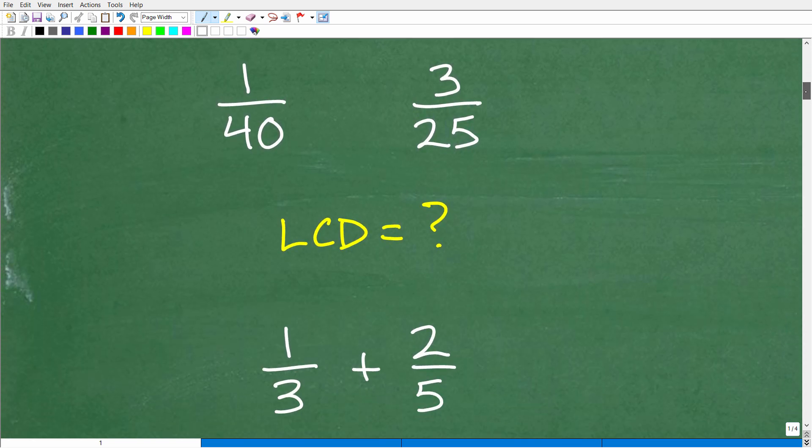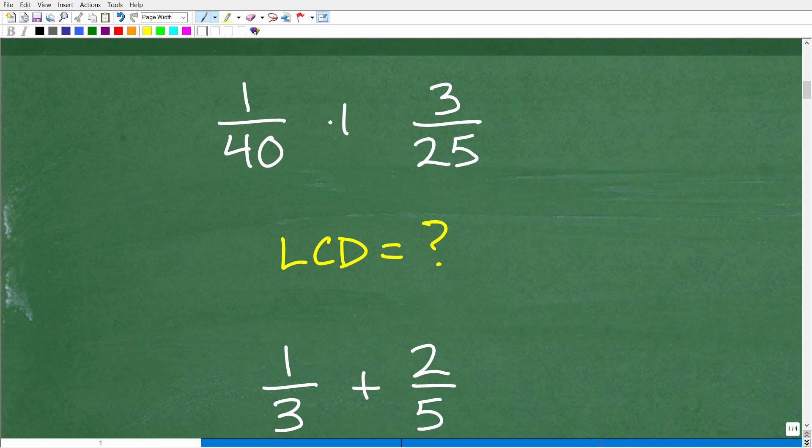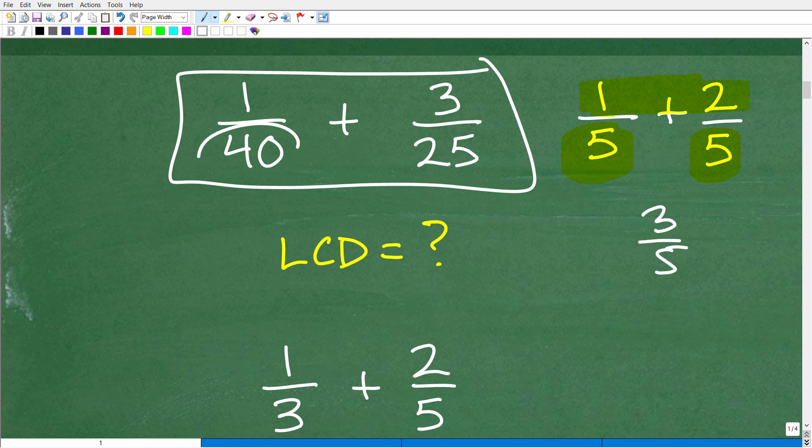All right. So again, we're trying to find the lowest common denominator. If we wanted to add these fractions or subtract them, we can't do them. We can't add them without them being the same denominator. In other words, if I had one fifth plus two fifths, I can add these fractions because the denominators are the same. We simply add the numerators. So the answer is three fifths, but in this situation, obviously the denominator is not the same. That's why we need the LCD. So that's why we have to find the LCD.